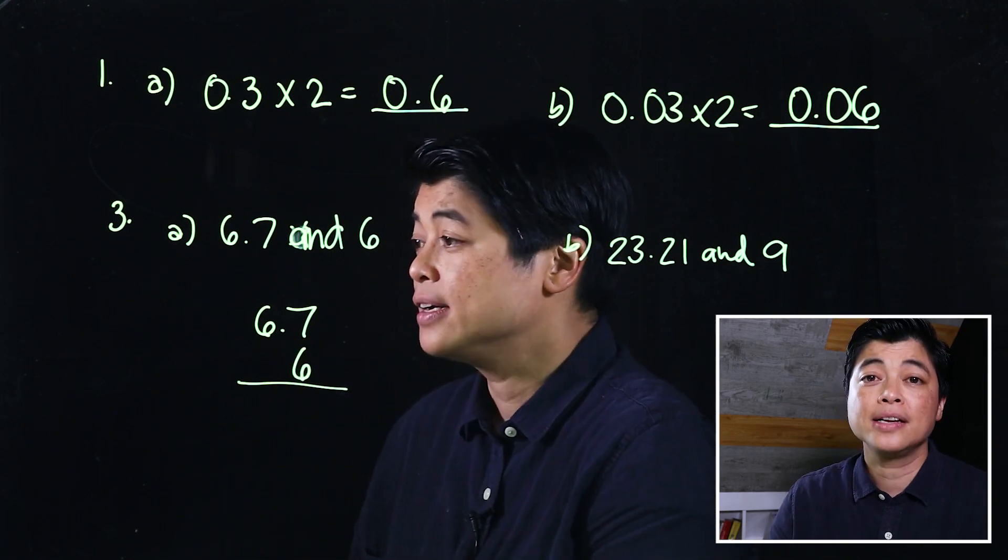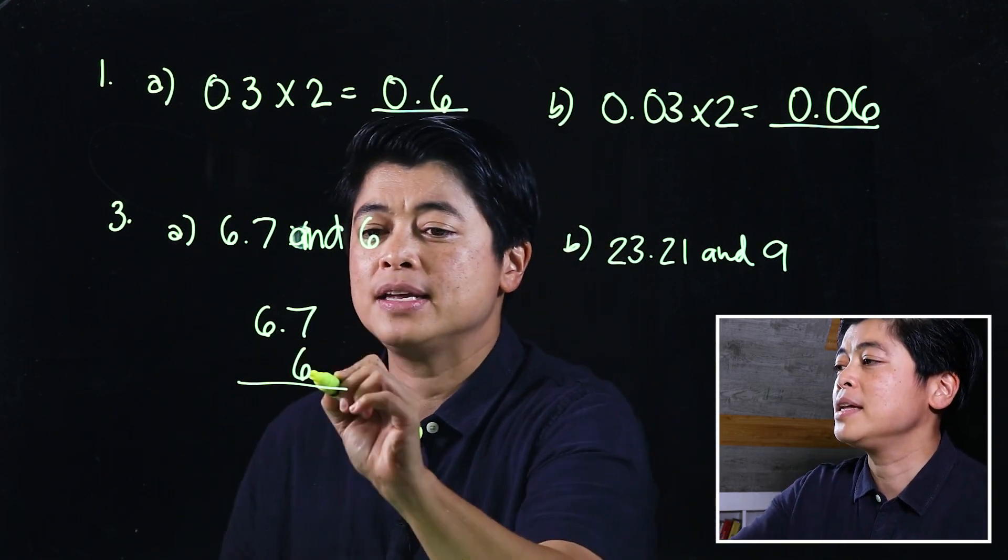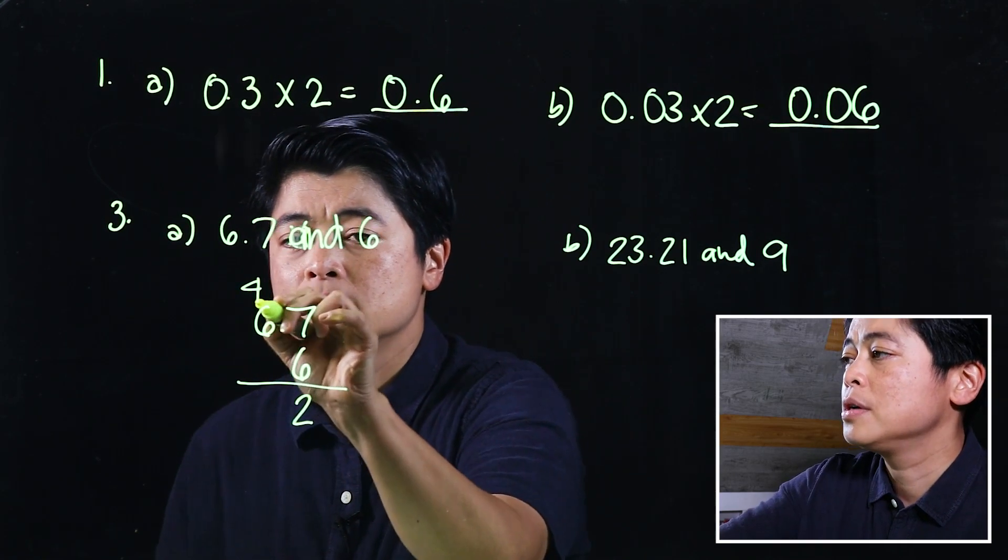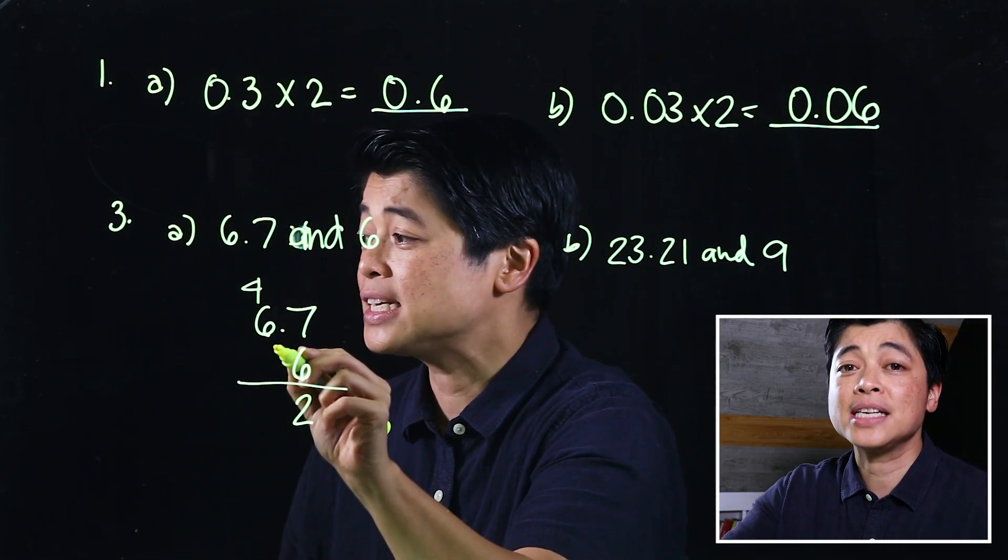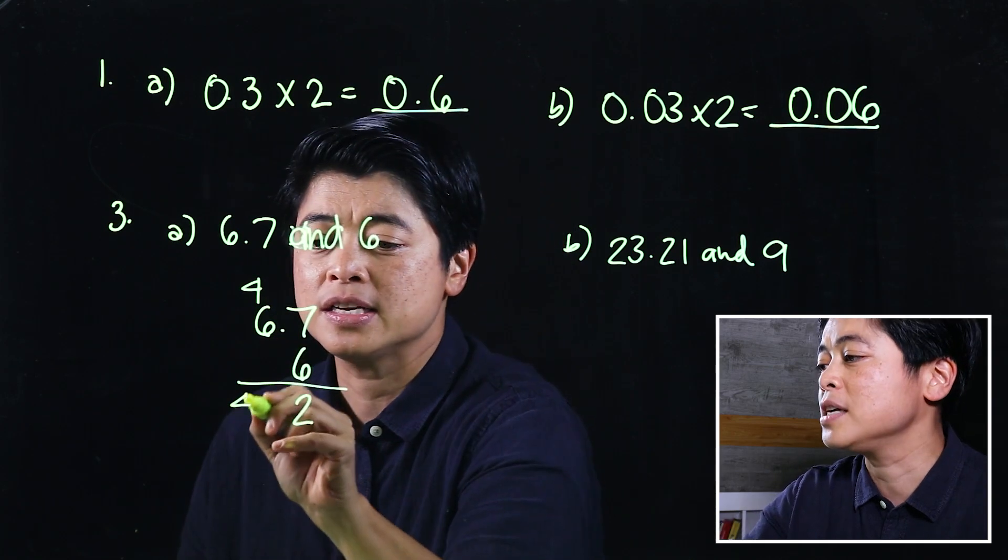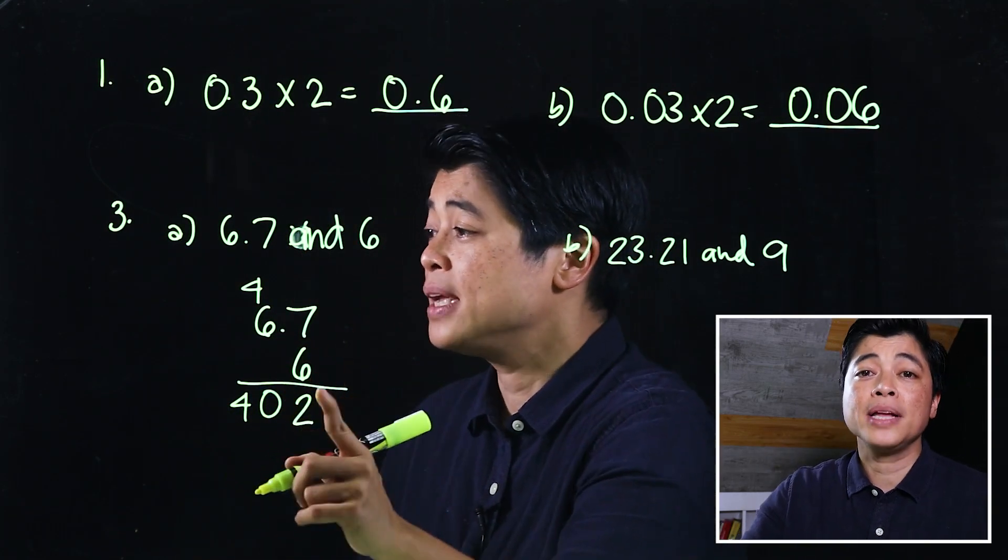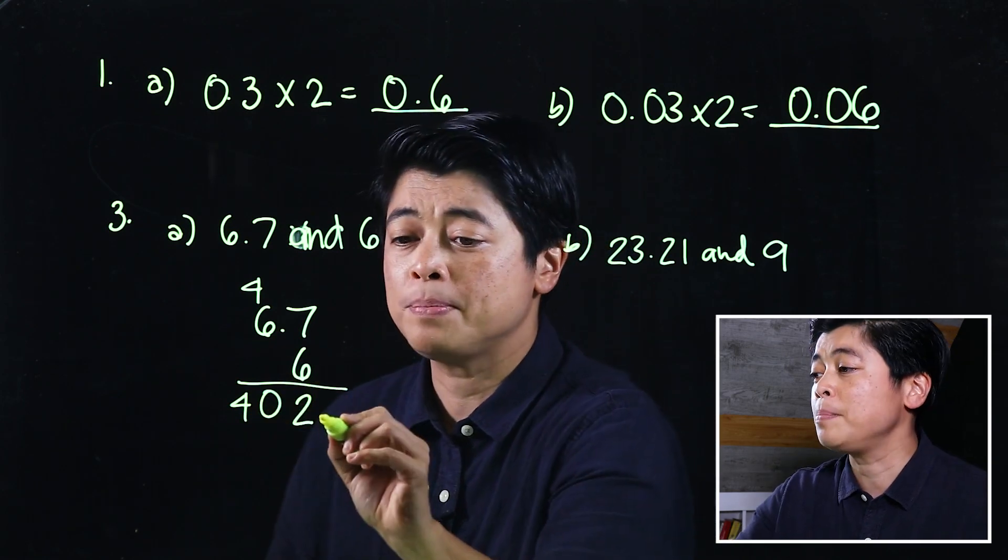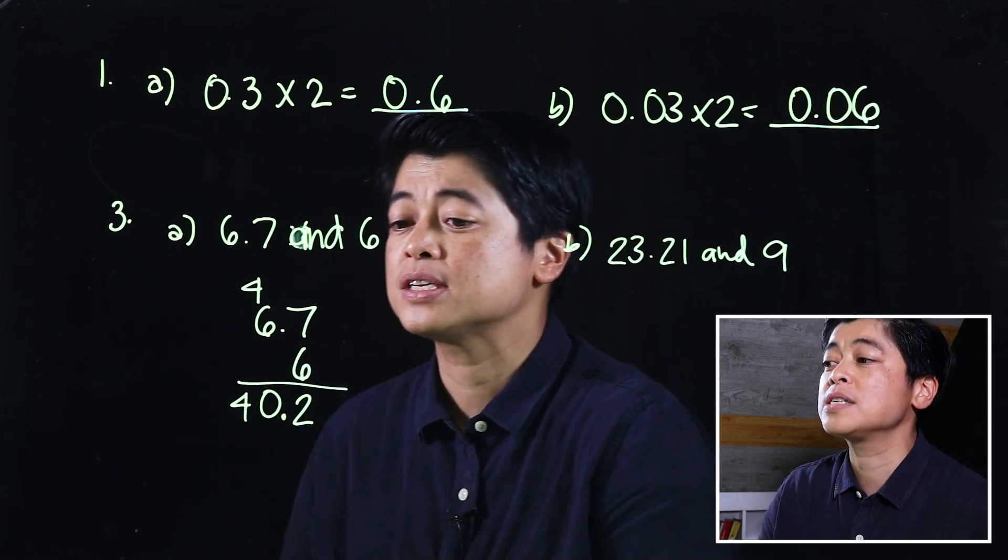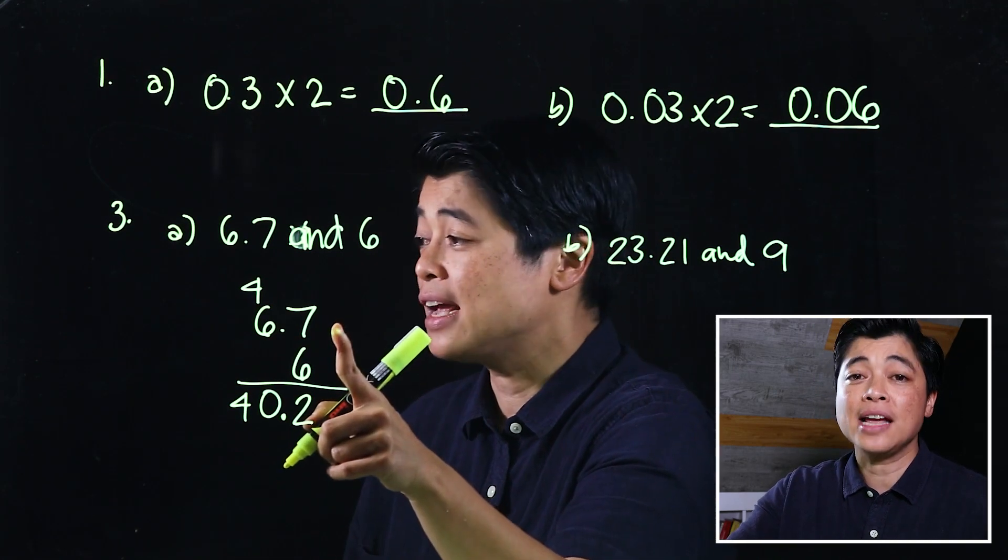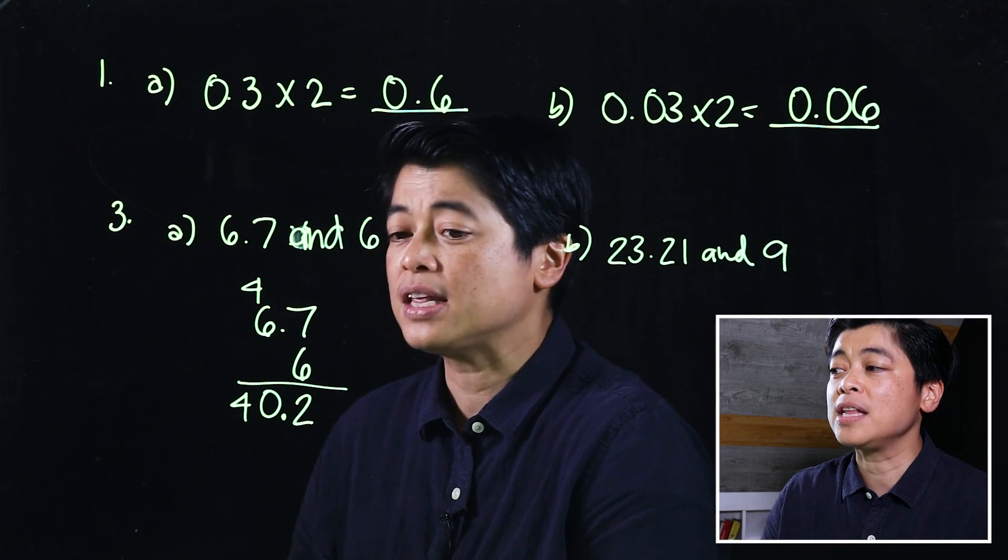When we multiply, this is 6 times 7 is 42, which means 6 times 6 is 36 plus 4 is 40. Then we count the number of decimal places. Since there's only one decimal place, the decimal goes after the zero. So the product of 6.7 and 6 is 40.2.